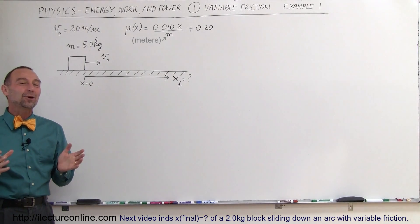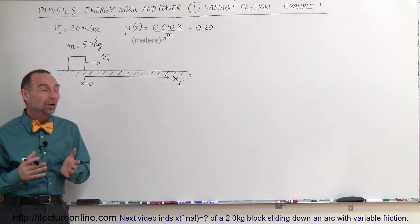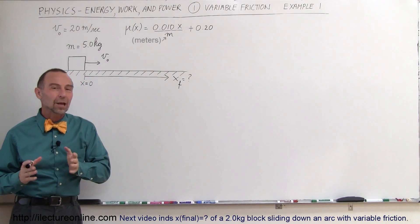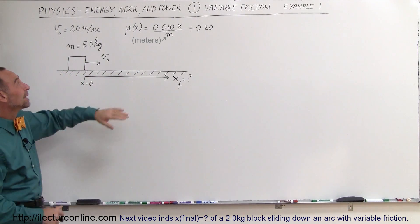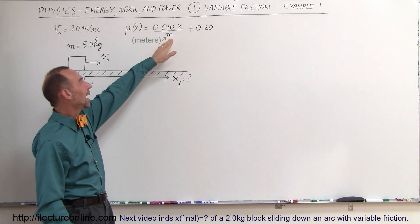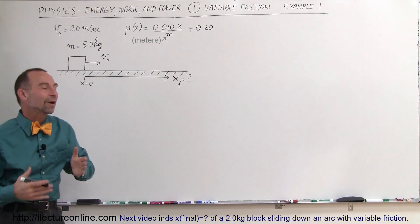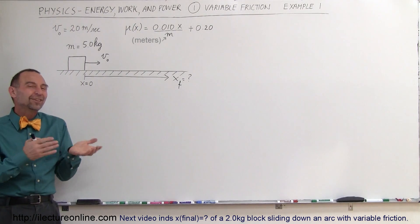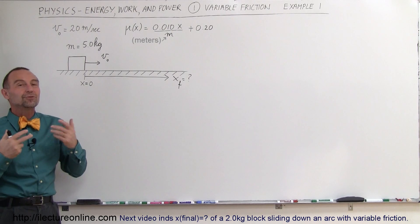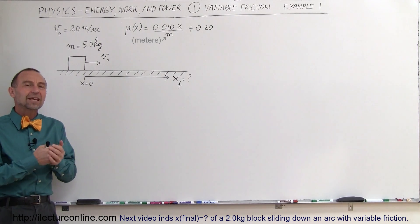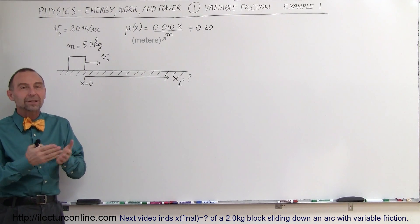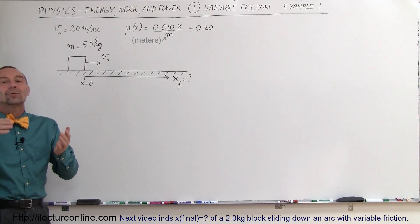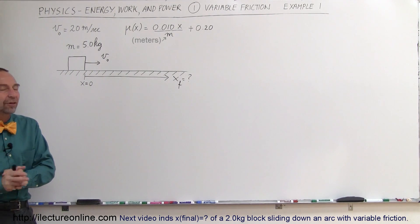Welcome to ElectronLine. In this video we're going to do an example problem where we have an object sliding over a flat surface where the coefficient of friction is not constant but depends on position — on distance away from the origin or from the point where x equals zero. A few viewers have asked for examples where we deal with work, power and energy where the friction is not constant but we may have to integrate to find the work done to overcome friction.